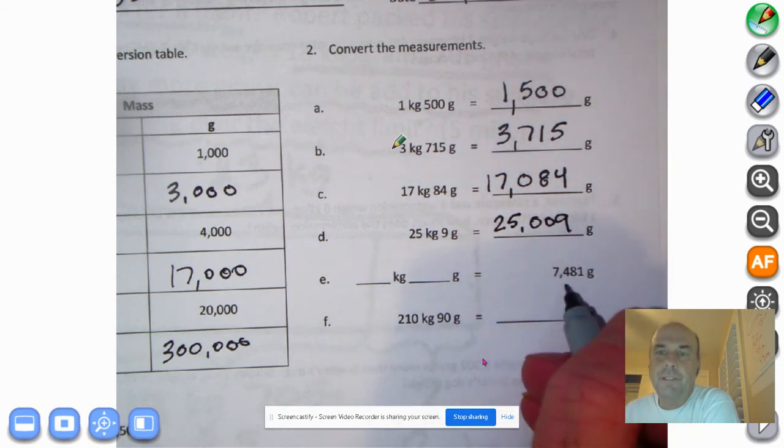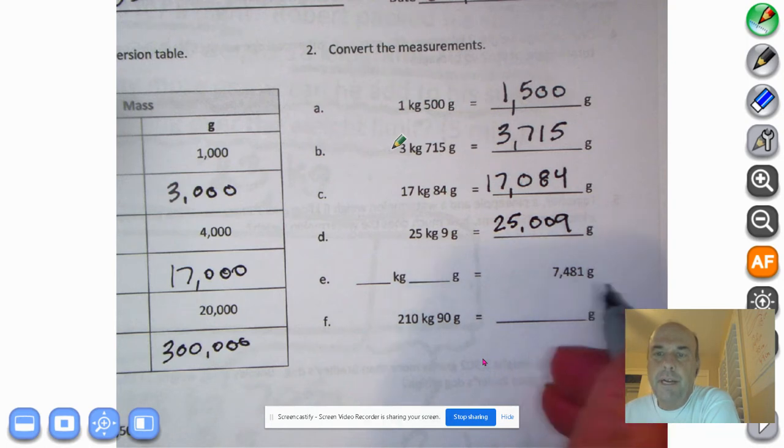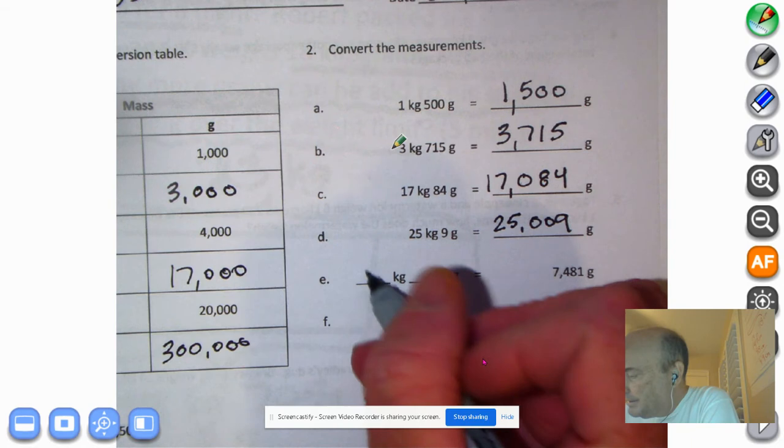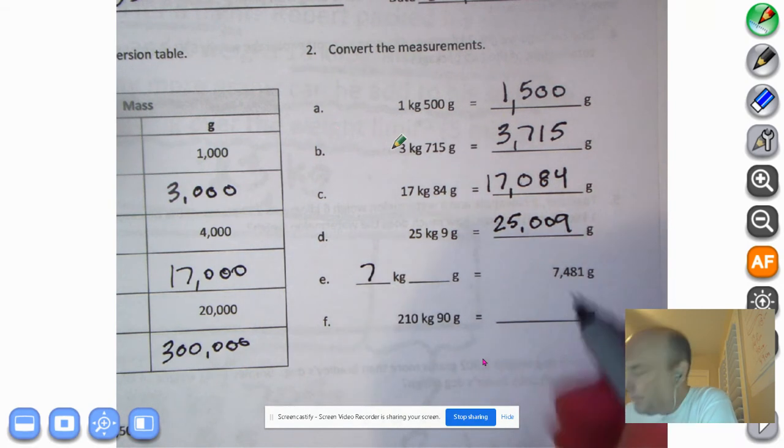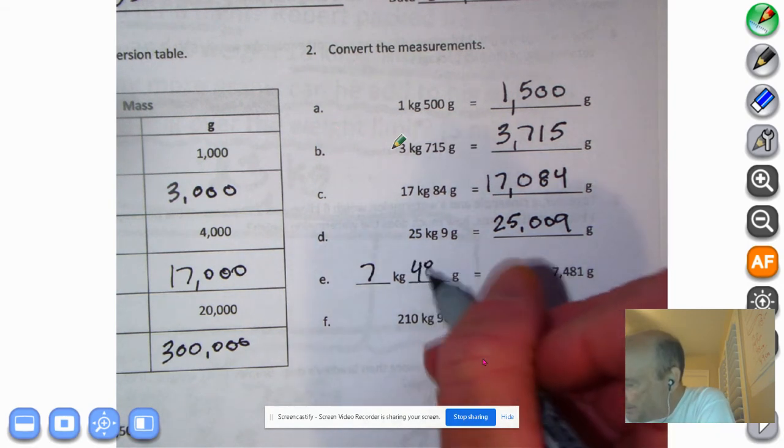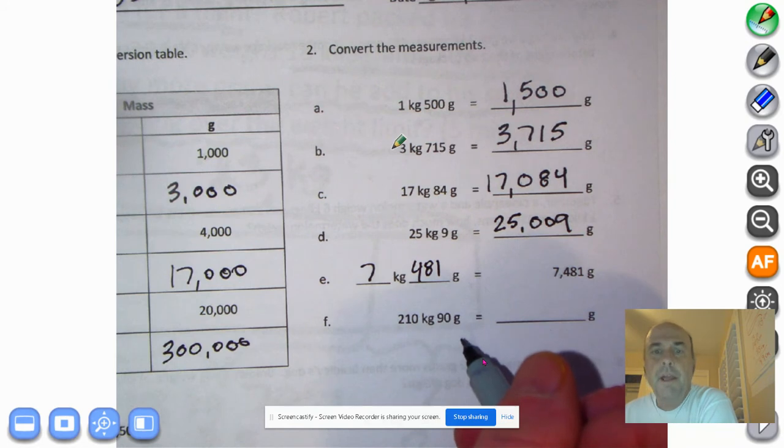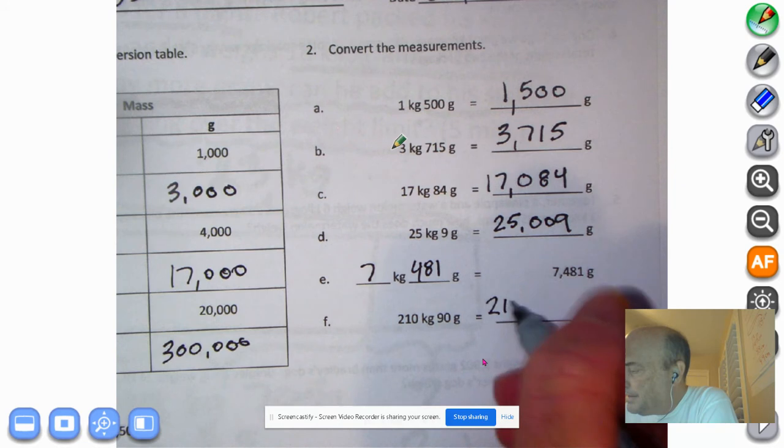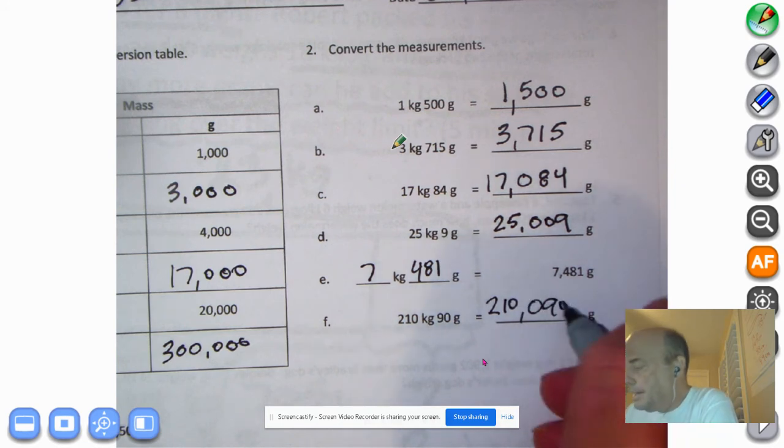How about this one? Reverse. 7,481 grams. Well, I know that 1,000 grams equals a kilogram. So I'll put 7 kilograms there and 481 grams. Down here, 210 kilograms, 90 grams would equal 210,000, right? And then 90. There's no hundreds. There's 90, 90 grams.